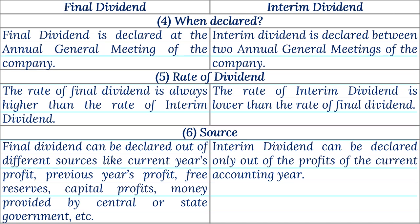Point 6 — Source: Final Dividend can be declared out of different sources like current year's profit, previous year's profit, free reserves, capital profits, money provided by central or state government, etc. Interim Dividend can be declared only out of the profits of the current accounting year.